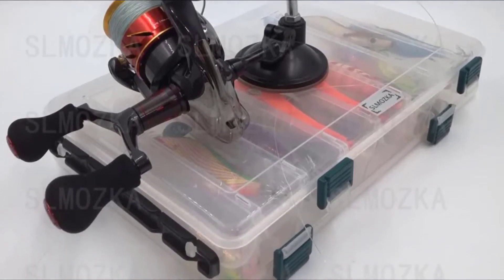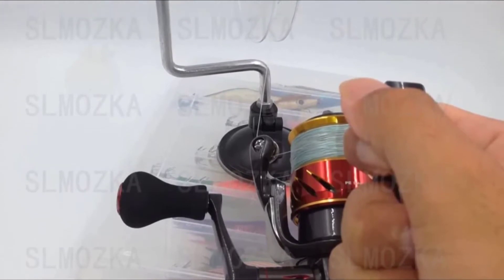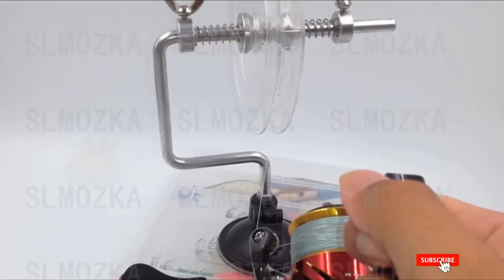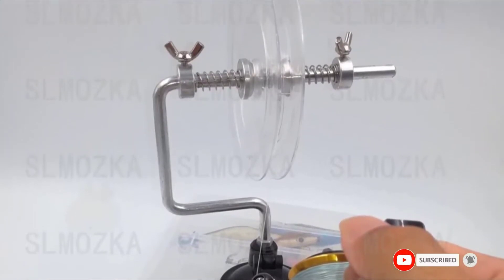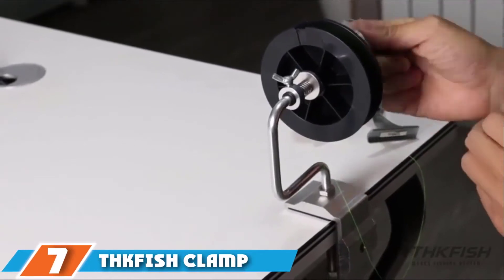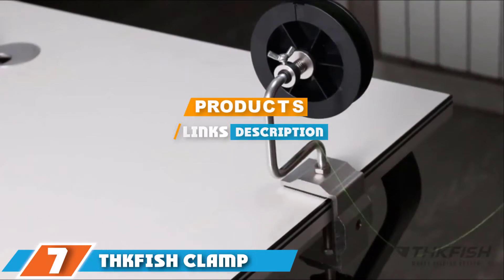The spring loaded tensions on the other end ensure even spooling. The fishing line spooler also comes with a strong vacuum suction cup. The suction cup mounts firmly on any flat and smooth surface. To get a tighter hold, simply wet the bottom. The fish line spool works best with diameters less than 0.98 inches.